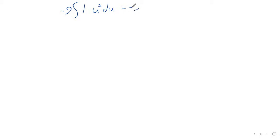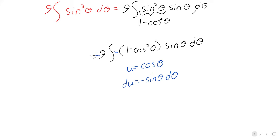We've got negative 9 times the integral of 1 minus u squared du. The integral of 1 is u, the integral of u squared is one-third u cubed, and you've got a plus C constant of integration. U was the cosine.